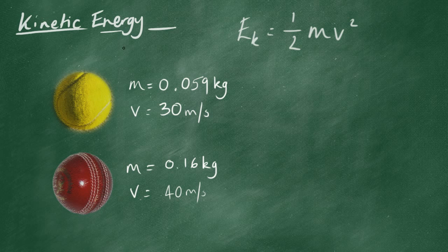The mass of the tennis ball, 0.059, and this velocity is 30 metres per second. That's off a forehand, normal shot in tennis.